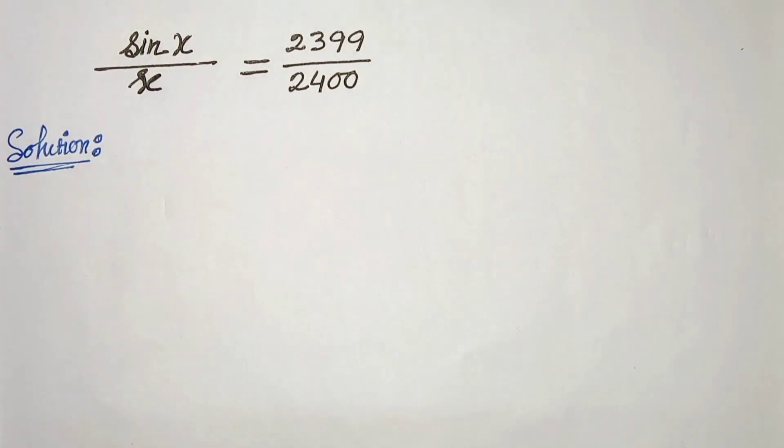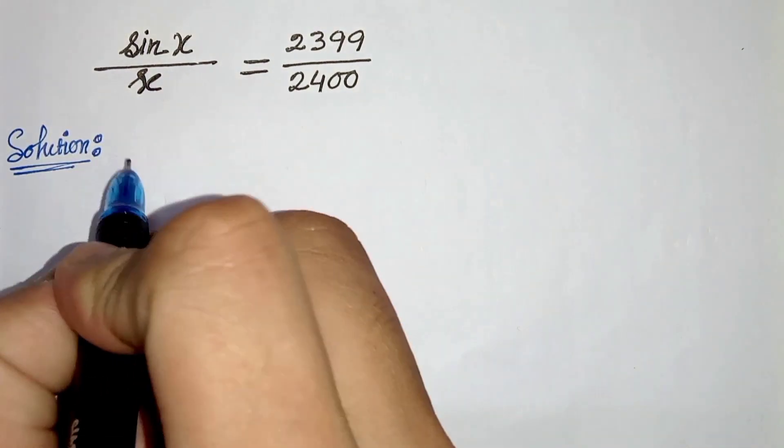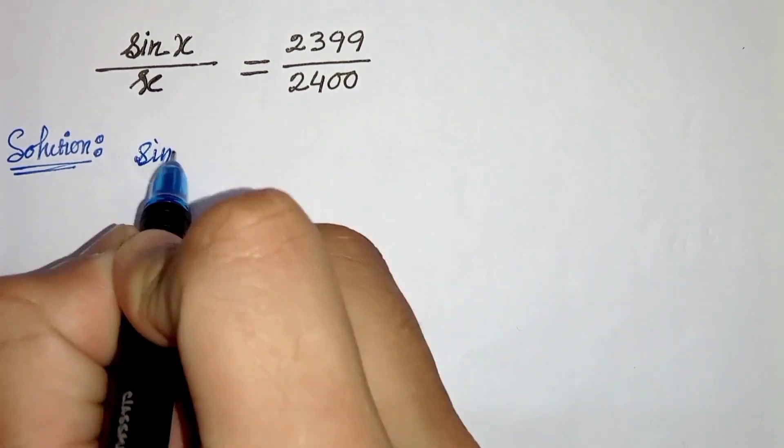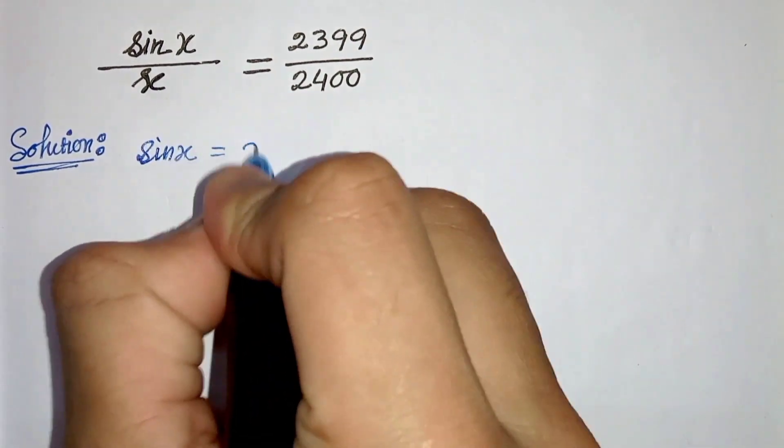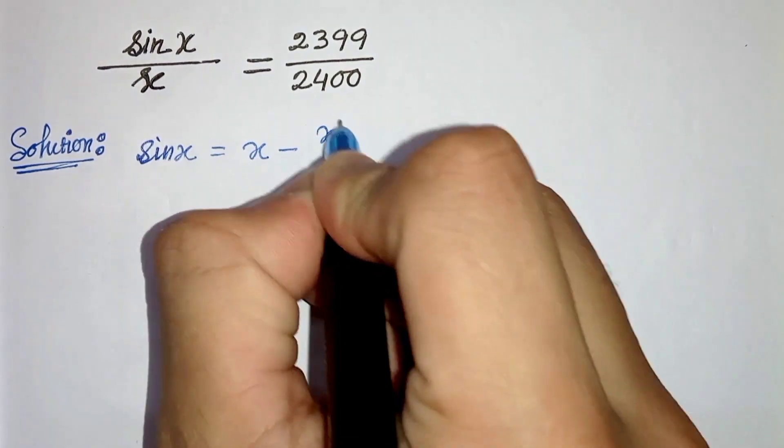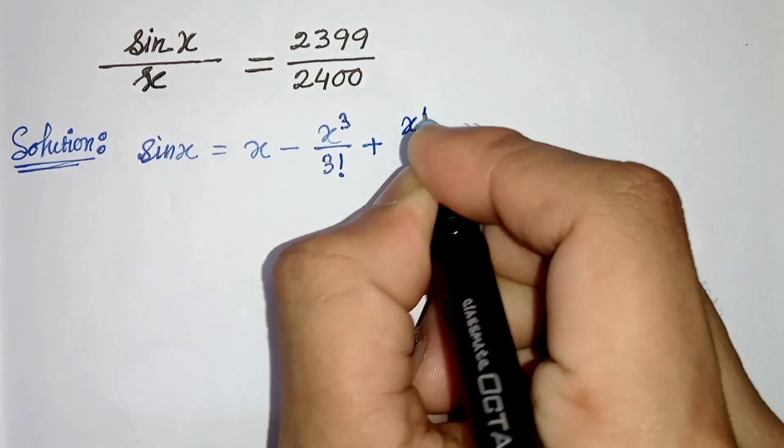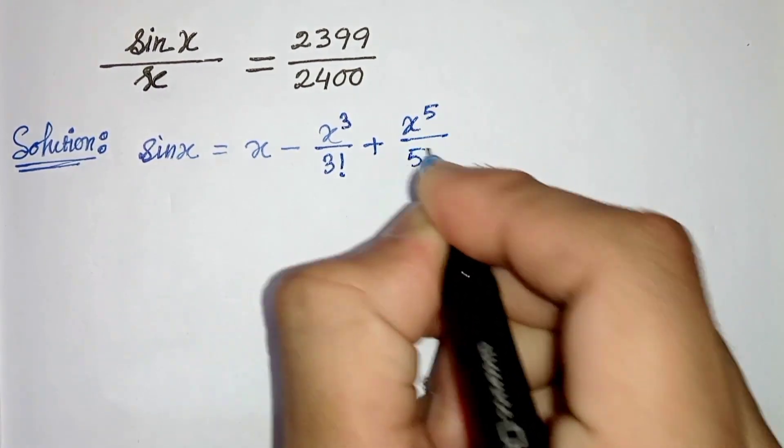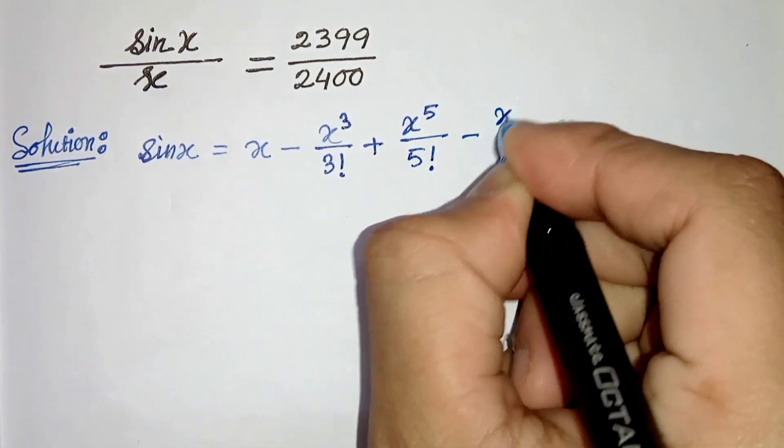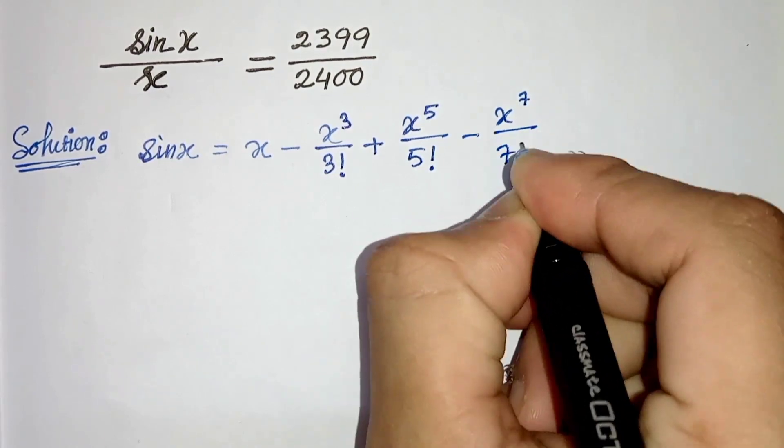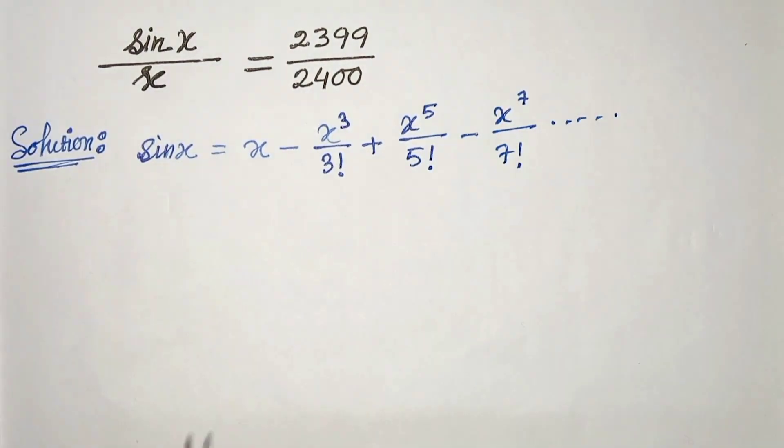First of all, we have to know the sin series, which is sin x can be written as x minus x cubed by 3 factorial plus x to the power 5 divided by 5 factorial minus x to the power 7 divided by 7 factorial and so on. This is the sin series.